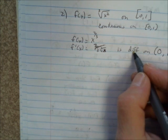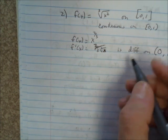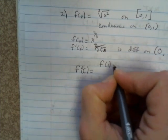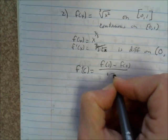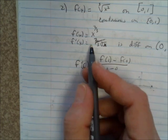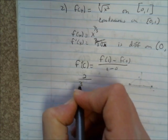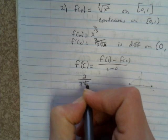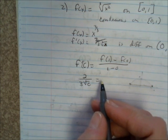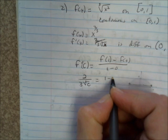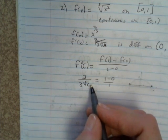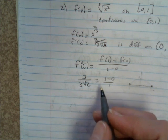So it's continuous, it's differentiable. Now all we have to do is take f'(c) equaling f(1) minus f(0) all over 1 minus 0. So f'(c) is 2 over 3 cubed root of c equals f(1) is 1, f(0) is 0, and 1 minus 0 is just 1.